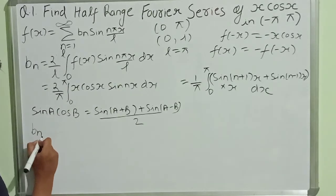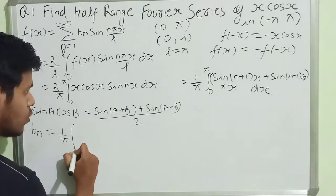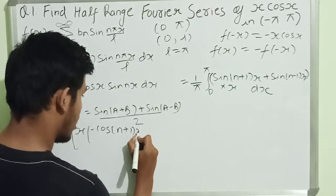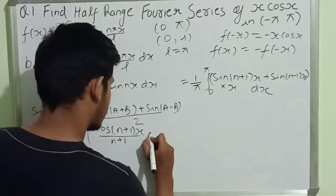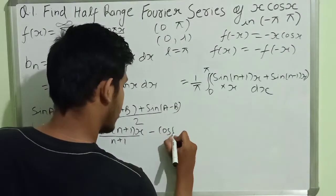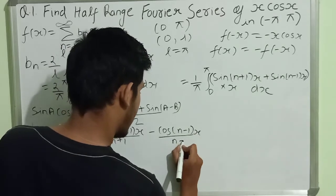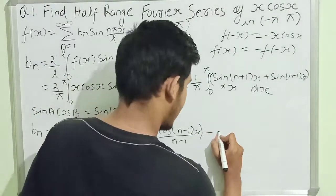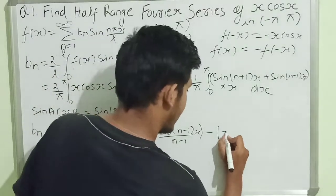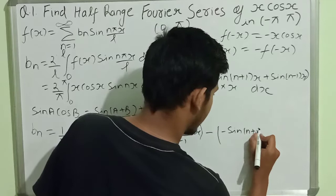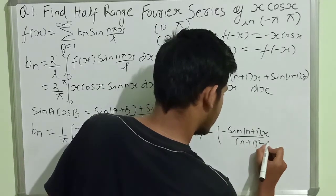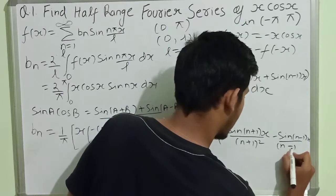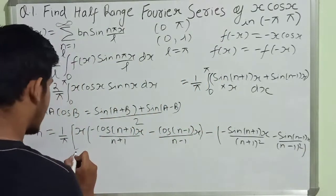Applying integration by parts, the value of b_n becomes: 1 upon π times { x times [minus cos((n+1)x)/(n+1) minus cos((n-1)x)/(n-1)] minus [minus sin((n+1)x)/(n+1)² minus sin((n-1)x)/(n-1)²] }, evaluated with limits 0 to π.